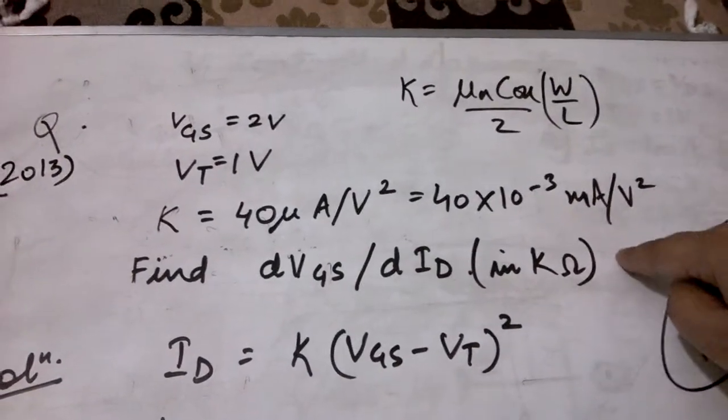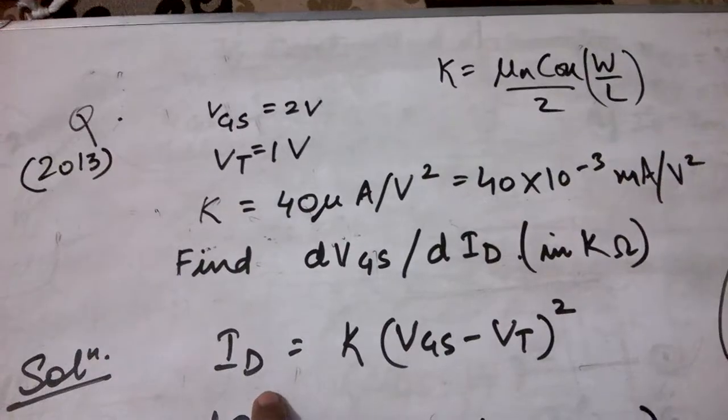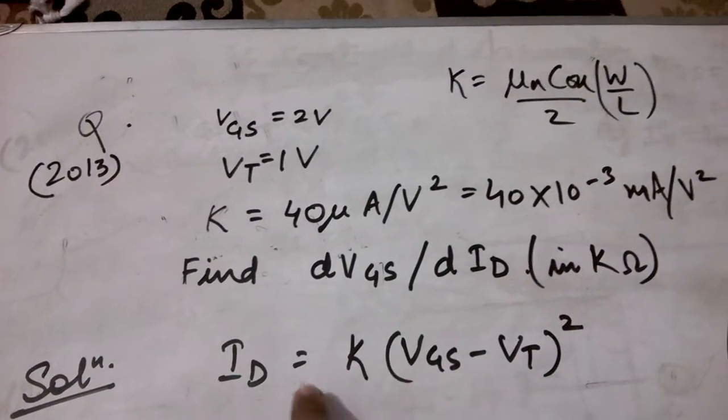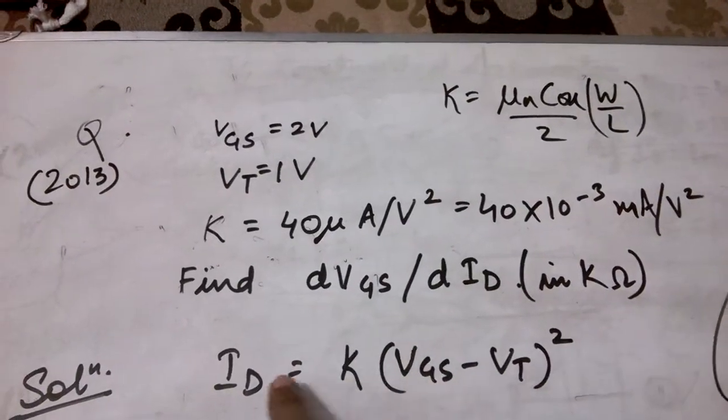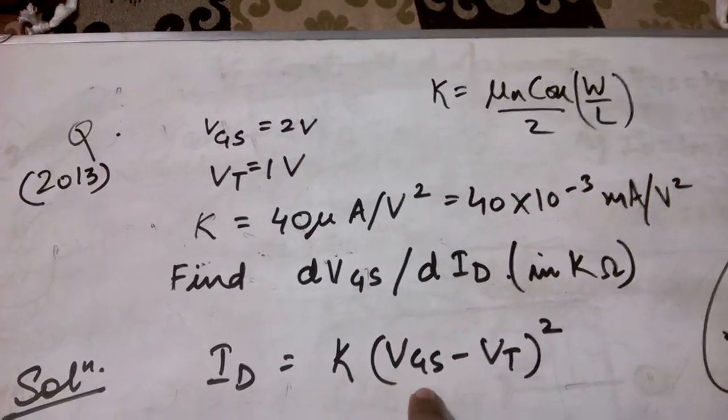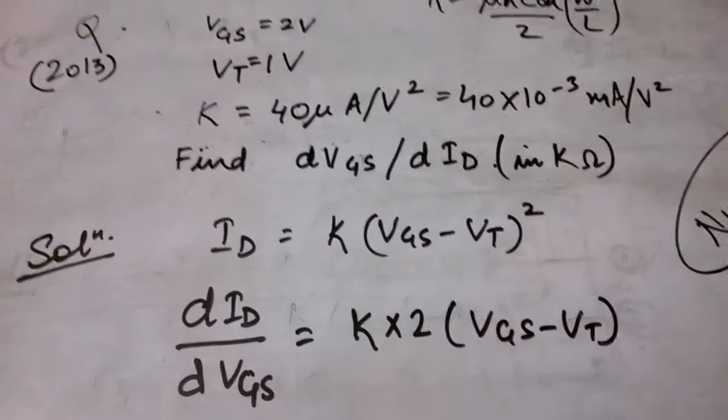As we discussed earlier, ID is K·(VGS - VT)². Now we differentiate this equation with respect to VGS, so we get the result as dID/dVGS = K·2·(VGS - VT).